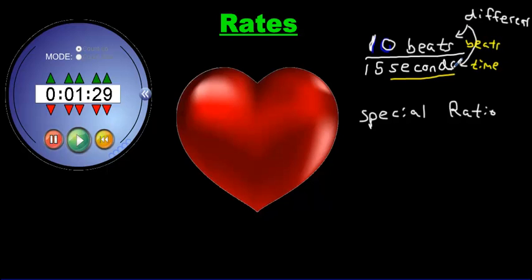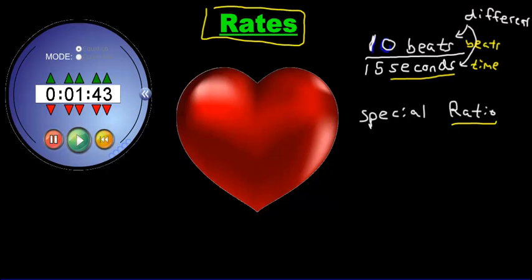Now since they are different, this ratio has a special name. It is called a rate. A rate is any situation where your ratio has two different units. Then you've got yourself a rate. Let me show you some more examples of where rates kick in.